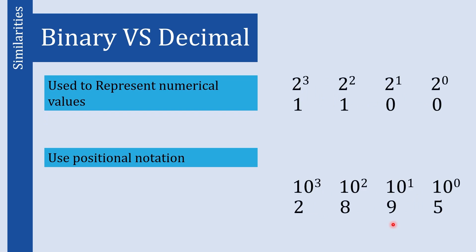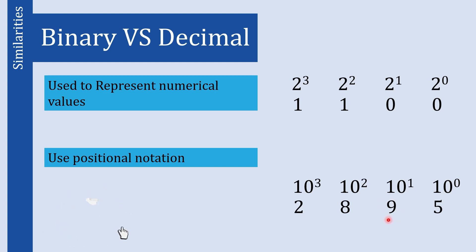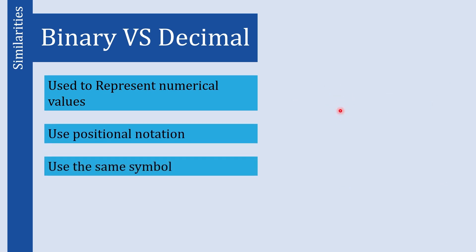The next similarity is that both systems use positional notation. For example, this is the binary number 1100 and this is the decimal number 2895. The value of each digit depends on its position. For example, the 5 is in the ones position so its value is 5, but the 9 is in the tens position so its value is 90. The same thing happens in binary — the value of each digit depends on its position.